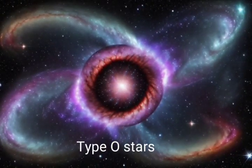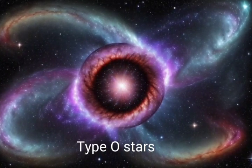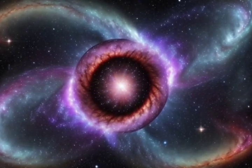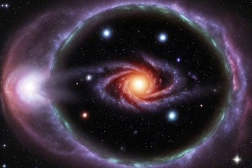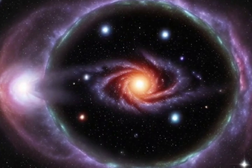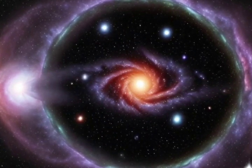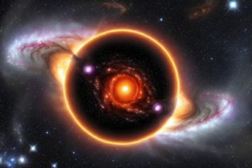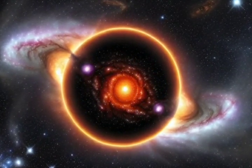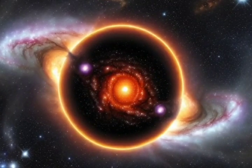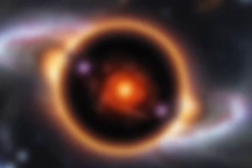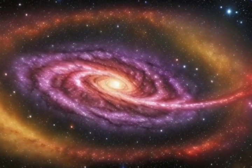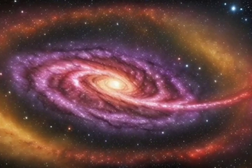O-type stars — the giants of the galaxy. O-type stars are the most massive and hottest in the universe. Their intense ultraviolet radiation ionizes the gas in their surroundings, creating stunning emission nebulae. These massive stars burn through their fuel quickly, usually lasting only a few million years before exploding as spectacular supernovae.